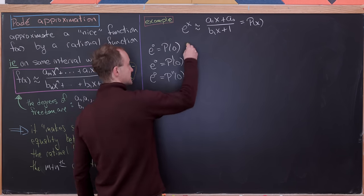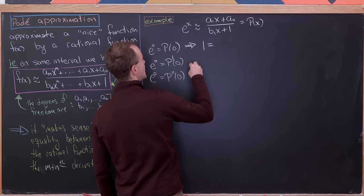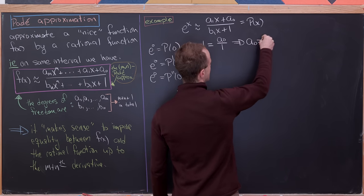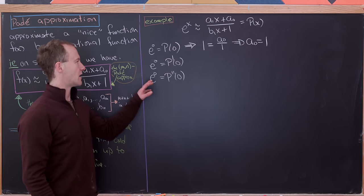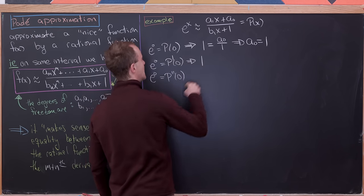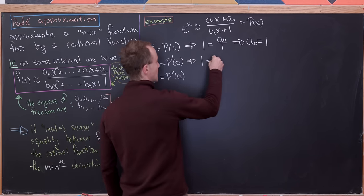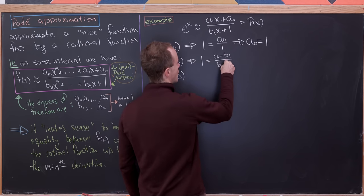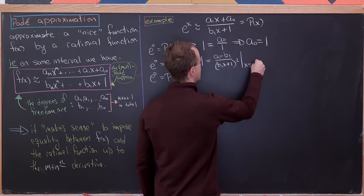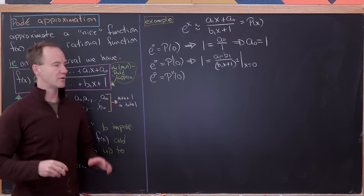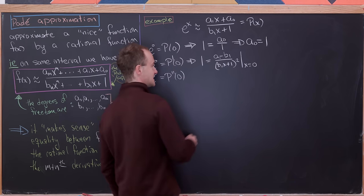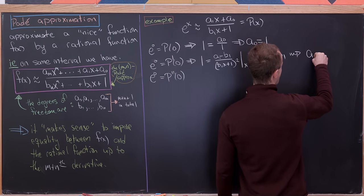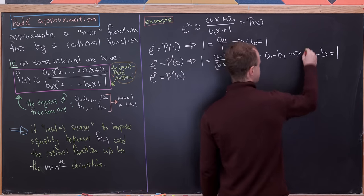Since e^0 = 1 and p(0) = a_0 / 1, we get a_0 = 1. For the first derivative condition, taking the derivative of p(x) using the quotient rule and evaluating at x = 0 gives a_1 - b_1 = 1. So before imposing the third condition, we have p(x) = (ax + 1)/(bx + 1) where a and b satisfy a - b = 1.